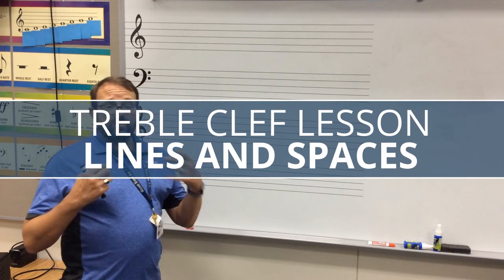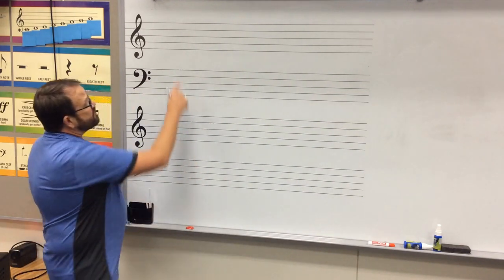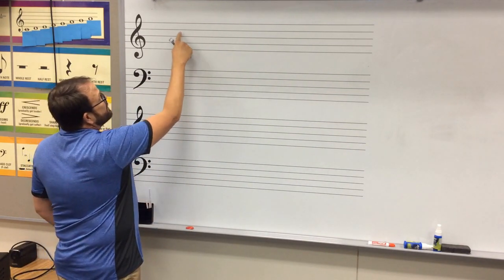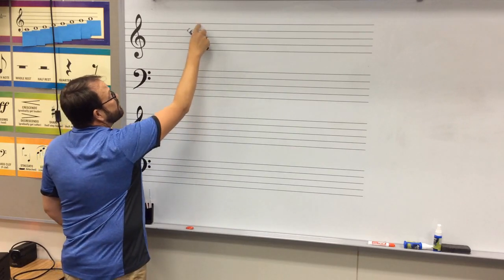Now remember a treble clef is written on a staff, and a staff is five lines, one, two, three, four, five, and four spaces, one, two, three, four.